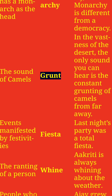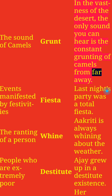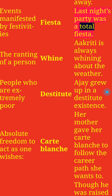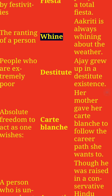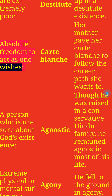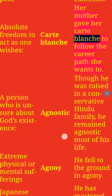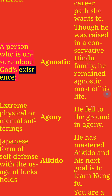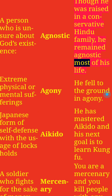The sound of parrots: Screech. I woke up to the screeching of birds by the window. The sound of camels: Grunt. In the vastness of the desert, the only sound you can hear is the constant grunting of camels from far away. Events manifested by festivities: Fiesta. Last night's party was a total fiesta. The ranting of a person: Whine. Akriti is always whining about the weather. People who are extremely poor: Destitute. Ajay grew up in a destitute existence. Absolute freedom to act as one wishes: Carte Blanche. Her mother gave her carte blanche to follow the career path she wants to. A person who is unsure about God's existence: Agnostic. Though he was raised in a conservative Hindu family, he remained agnostic most of his life.